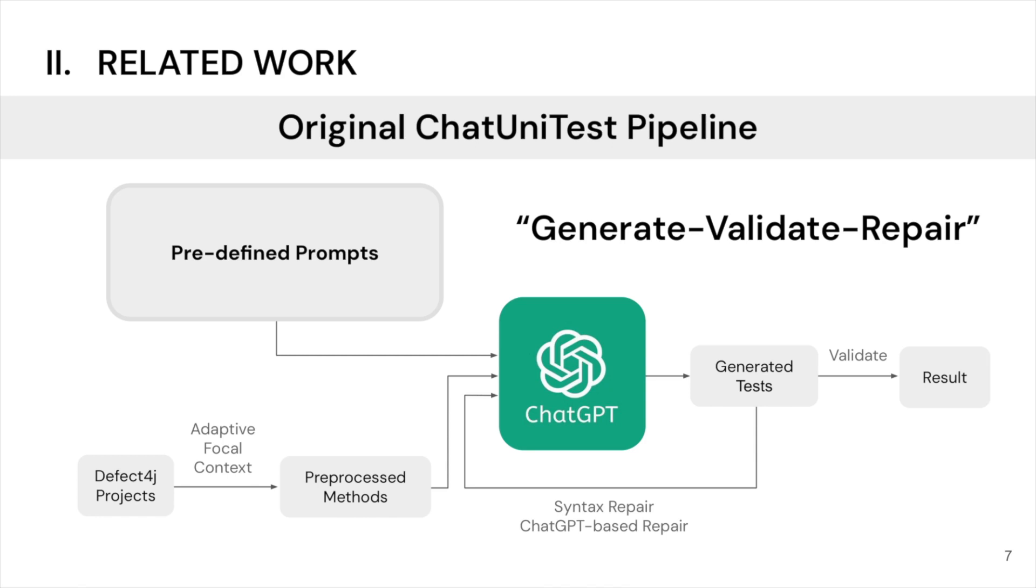At first, each method in the Defect4J project will go through a preprocessing step to generate the adaptive focal context, which contains the focal method itself and its dependency. The context will be generated to not exceed a predefined token limit because of the computational cost of ChatGPT.